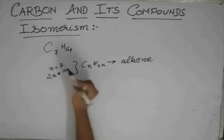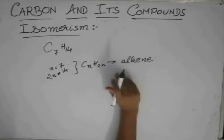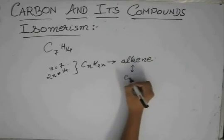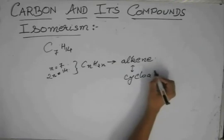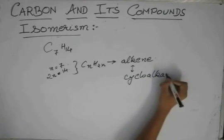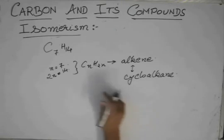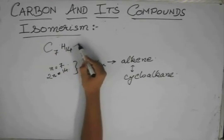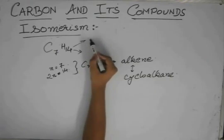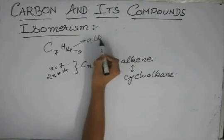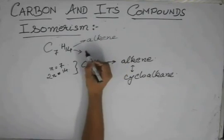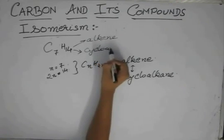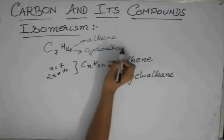But you see an alkene shares a common molecular formula with a cycloalkane. So when you are given this formula and asked which type of compound it is, it can be an alkene. It can also be a cycloalkane.